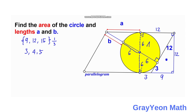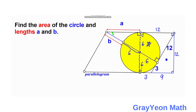Focusing on the smaller triangle — since the point of tangency gives a 90-degree angle — this smaller triangle is also a 3-4-5 right triangle. The shorter leg of this triangle is 6 units.